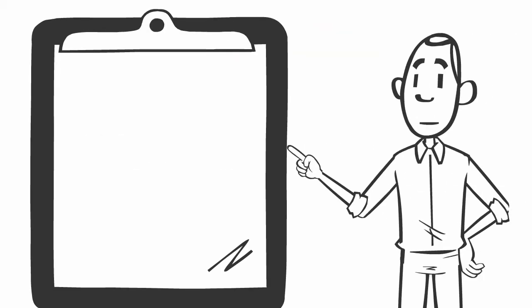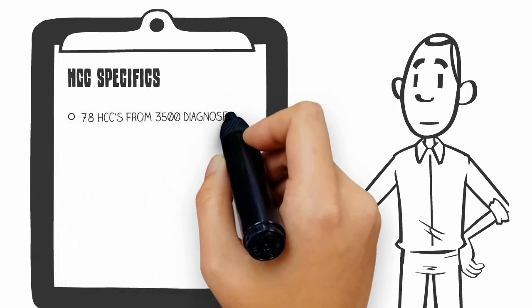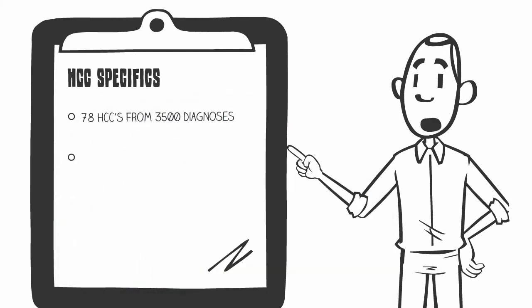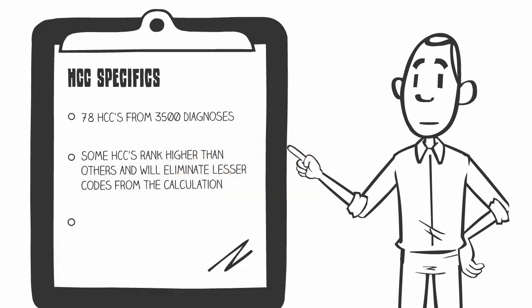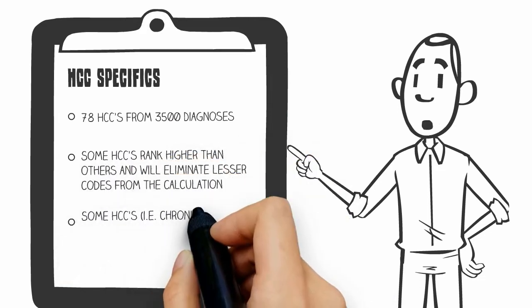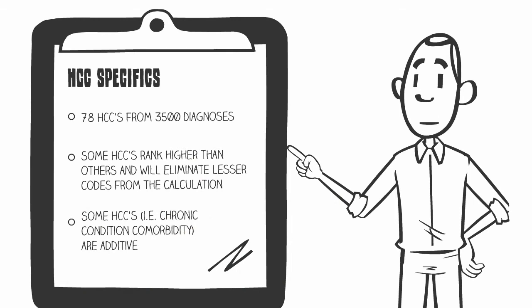There are 78 HCCs comprised of more than 3,500 diagnoses. Some HCCs rank higher than others and will eliminate lesser codes. For instance, if you had diabetes with a chronic condition, you're obviously excluded from the HCC diabetes without a chronic condition.